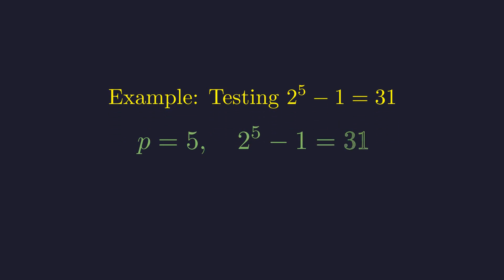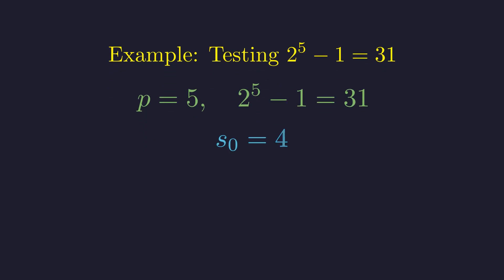We need to perform p minus 2 equals 3 iterations. Start: s equals 4. Now we square this and subtract 2. Step 1, s equals 4 squared minus 2 equals 14.